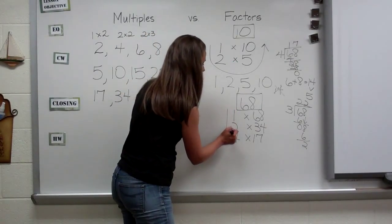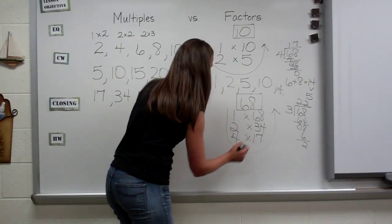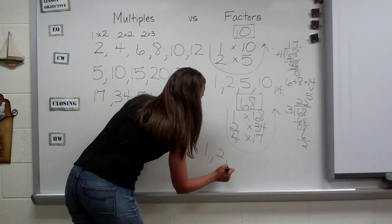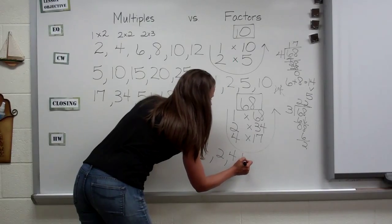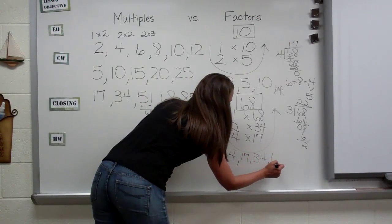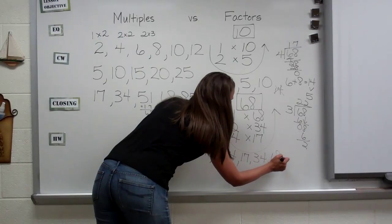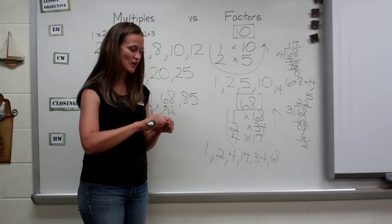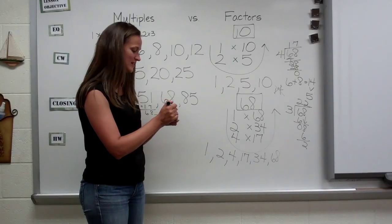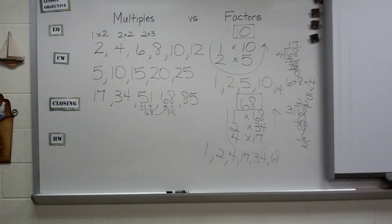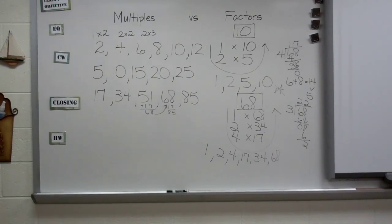So I'm going to make my little U, and now I know how to write it: one, two, four, seventeen, thirty-four, sixty-eight. And those are my factors. Thanks for joining me — hopefully that helped. It was a little longer than I had hoped, but hopefully it helped students who needed to see the difference between multiples and factors.